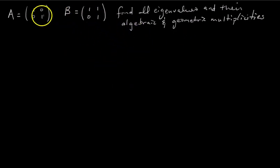So let's see that in action. So this practice problem I came up with has two matrices, A and B, and the problem says, find all the eigenvalues for each matrix and then find their corresponding algebraic and geometric multiplicities.